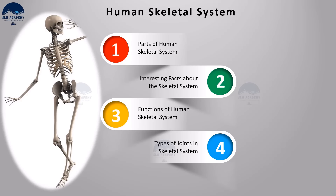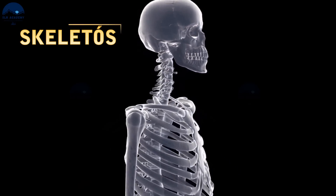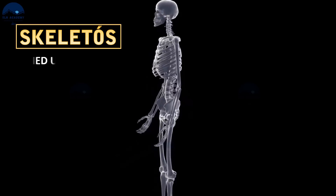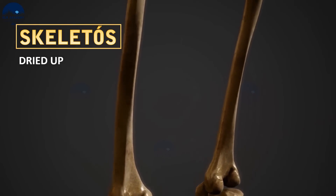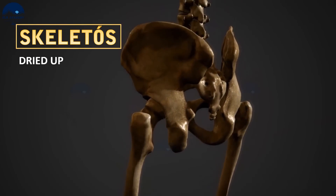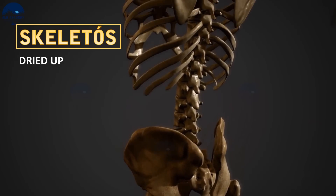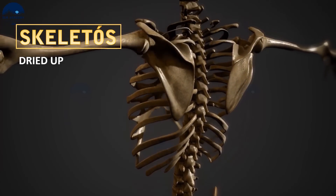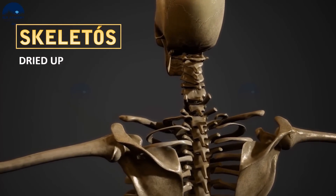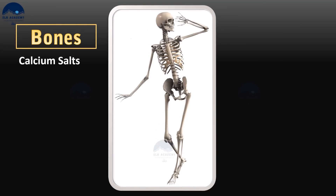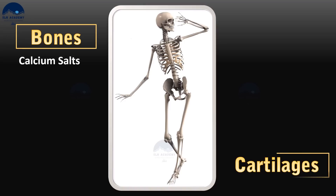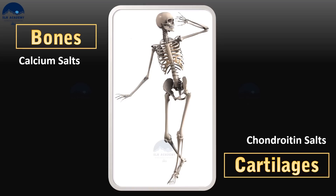The term skeleton came from the Greek word 'skeletos' which means dried up. The human skeletal system consists of a framework of bones and a few cartilages. Bones and cartilages are specialized connective tissues. The bone has a very hard matrix due to calcium salts in it, and the cartilage has a slightly pliable matrix due to chondroitin salts.